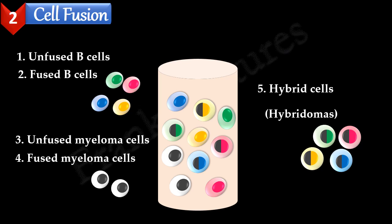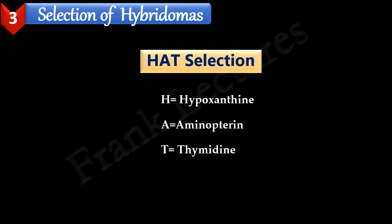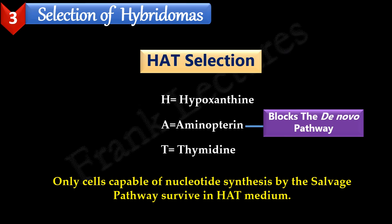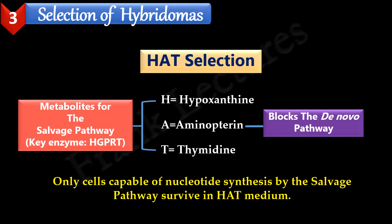Our next aim is to select these hybridomas from this mixture of cells. Selection of hybridomas from the mixture of fused and unfused cells is done by using HAT medium. HAT stands for hypoxanthine, aminopterin, and thymidine. Recall that HAT medium is a selection medium for mammalian cell cultures. Selection of cells in this medium is based on the fact that there are two pathways of nucleotide synthesis in mammals. Aminopterin present in the HAT medium blocks the de novo pathway. The only way a cell can survive in HAT medium is by using the salvage pathway of nucleotide synthesis. HGPRT is a key enzyme in the salvage pathway, so if a cell has a non-functional HGPRT gene, the cell will die in the HAT medium, because for this cell both pathways of nucleotide synthesis will fail.